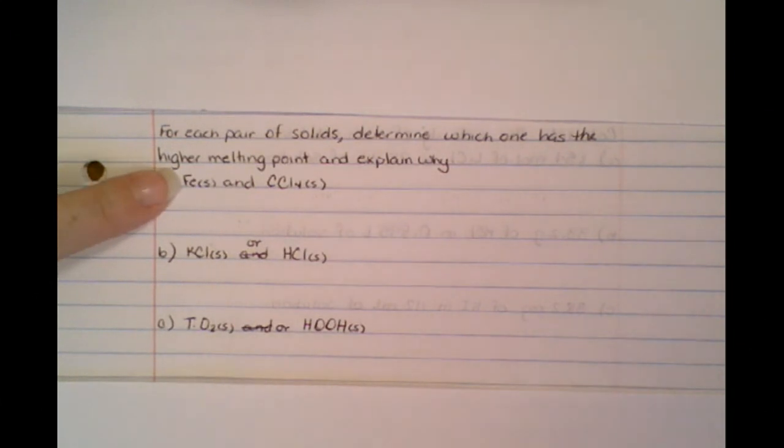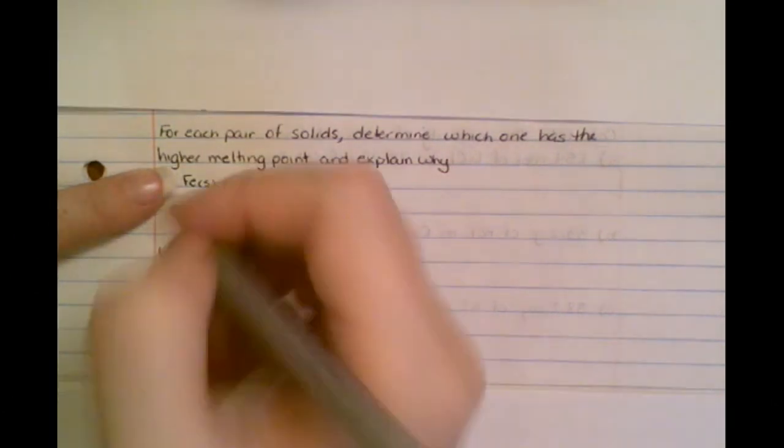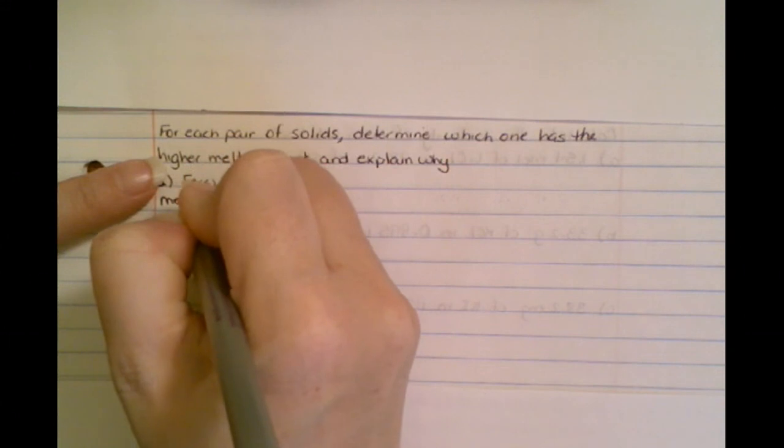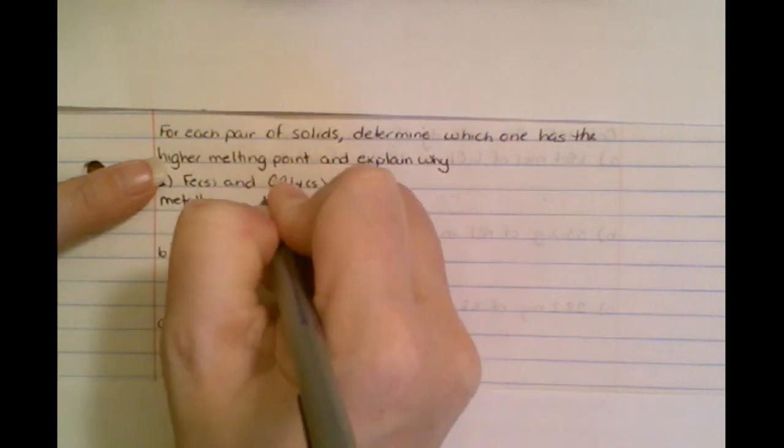So we're going to look at this first one, and we see that iron and CCl4. So iron has what kind of bond? It has a metallic bond, and CCl4 has what type of bond? A molecular. So this is a metallic, and this is a molecular.